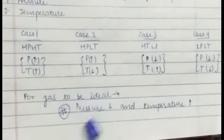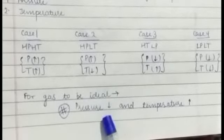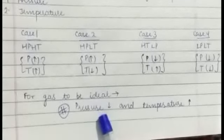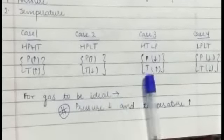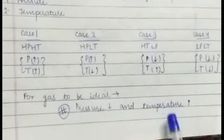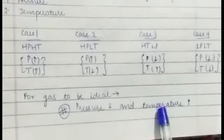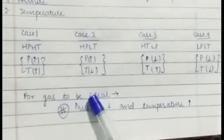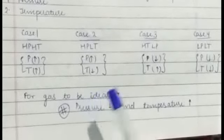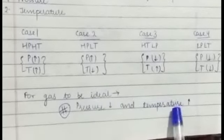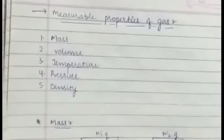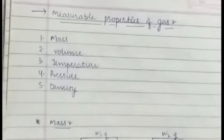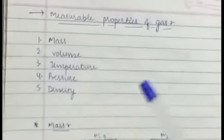Toh ideal hone ke liye hamaara pressure kam hona chahiye aur hamaari temperature hamaari zhaada honi chahiye. Kyunki jitna kam se kam hamaari pressure apni gas per daalenge utna zhaada uske particles idhar udhar move kar sakte hain. Aur jaise hum temperature zhaada karenge, hamaari gas ki kinetic energy badhti jayegi.